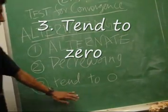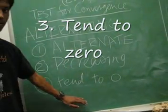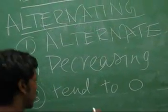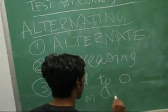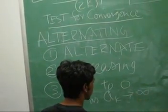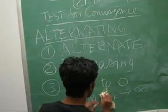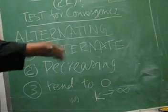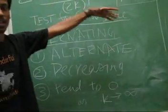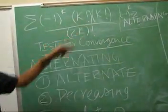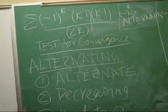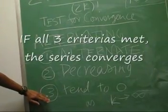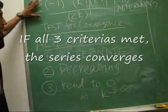Rule number 3: it must tend to 0. It doesn't mean it will equal 0 — it means a sub k tends to 0 as k goes to infinity. As k gets bigger, this will tend to 0, which is true. So once all three criteria are met, we know the series is convergent.